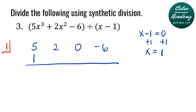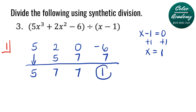Step 1 is to bring down the first term, 5. Then we multiply 5 by the value indicator 1, which is 5. Adding 2 and 5, that's 7. Now repeat the process: 7 times the value indicator, that's 7. 0 plus 7, that's 7. Then multiply 7 times the value indicator, that's also 7. Adding negative 6 and 7, that's 1. So 1 here is the remainder.